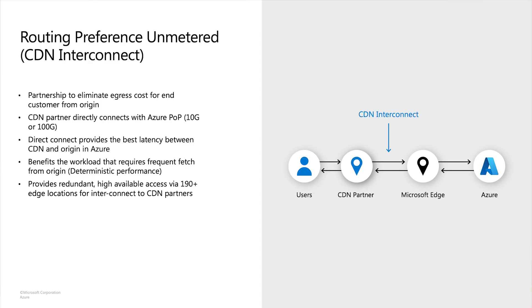One use case for routing preference is to deliver traffic via CDN providers to the internet. For this, we have introduced routing preference unlimited, also known as CDN interconnect. Azure users can host content in Azure storage and use CDN providers to deliver traffic to the end user. Microsoft has direct interconnect with CDN providers and there is no egress cost to the Azure user for traffic delivered via this direct interconnect.